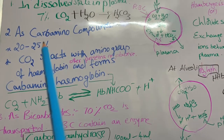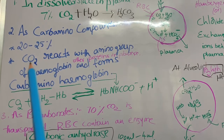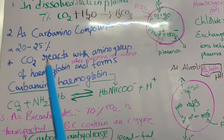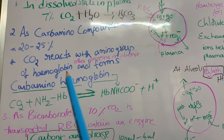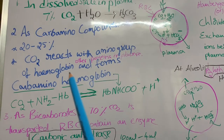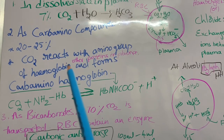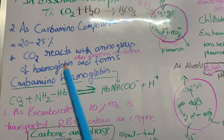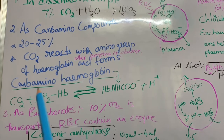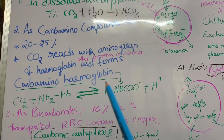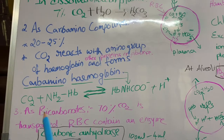The second way is as carbamino compounds. Twenty to twenty-five percent of carbon dioxide is transported in this way. In this process, carbon dioxide reacts with the amino group of hemoglobin. Hemoglobin is a conjugated protein, so it contains amino acids and amino groups. CO₂ reacts with the amino group of hemoglobin.